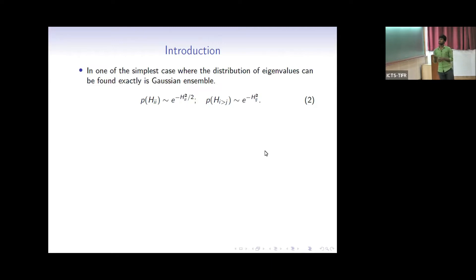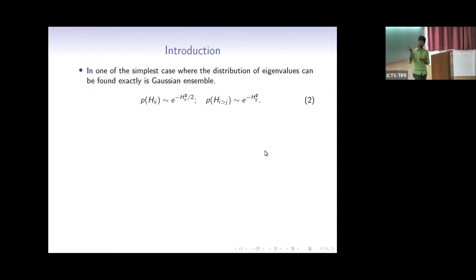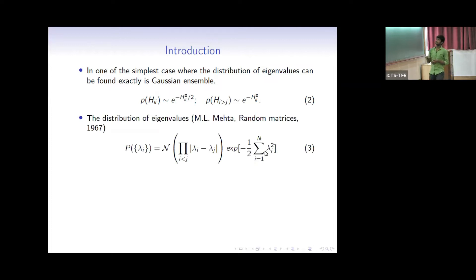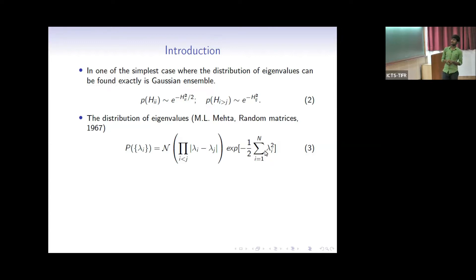In one of the simplest cases where we can calculate this distribution of energies exactly, we take the Gaussian ensemble where the probability distribution for the diagonal elements is exponential minus x squared by 2, and for the off-diagonal elements the distribution is exponential minus x squared. We take this Hamiltonian to be symmetric, meaning H_ij equals H_ji. In this case, the distribution of energy eigenvalues takes the form of equation 3: a term like exponential minus half lambda_i squared, and a product term of mod(lambda_i minus lambda_j). Though the elements were independent, the eigenvalues become very correlated.